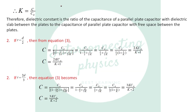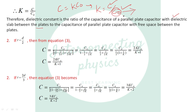From the relation C equal to K·C₀, we get K equal to C over C₀. This gives another definition of dielectric constant: dielectric constant is the ratio of capacitance of the parallel plate capacitor with dielectric slab between the plates to the capacitance with free space between the plates. If T equals D/2, we get C equal to 2K·C₀/(K plus 1); if T equals 2D/3, the equation becomes 3K·C₀/(K plus 2). The conclusion is that introducing dielectric between the plates increases capacitance.